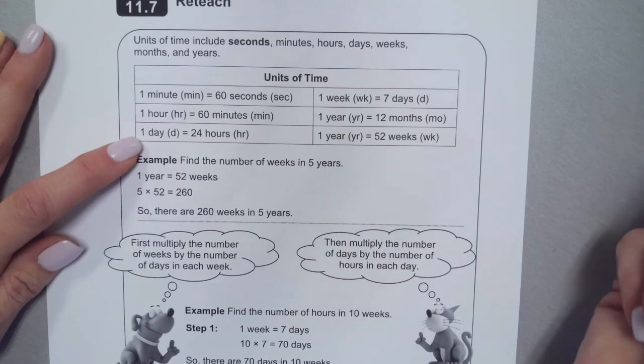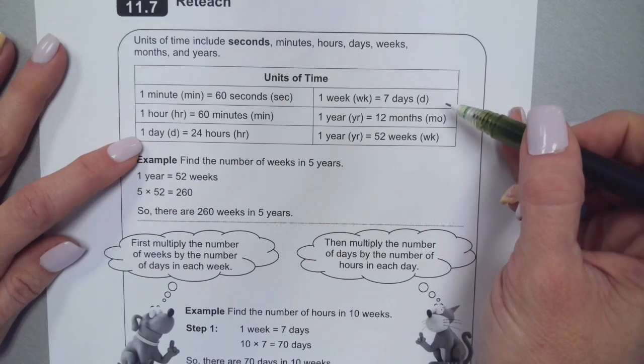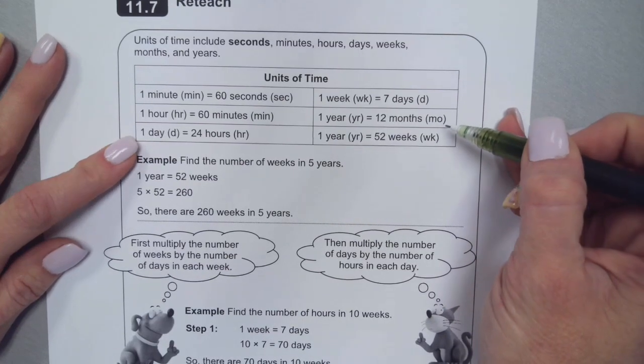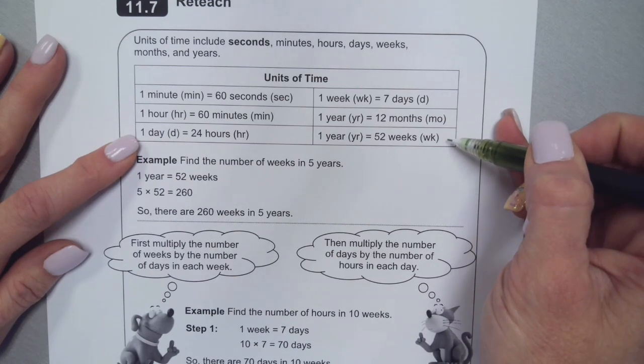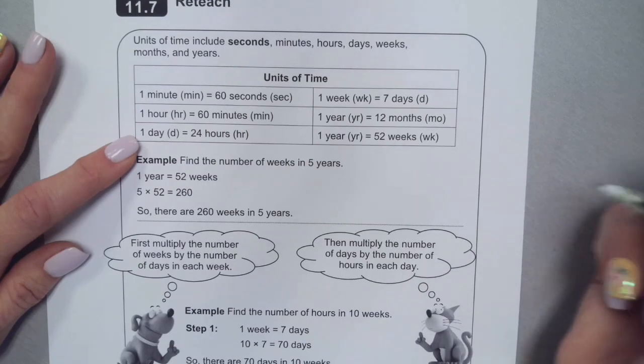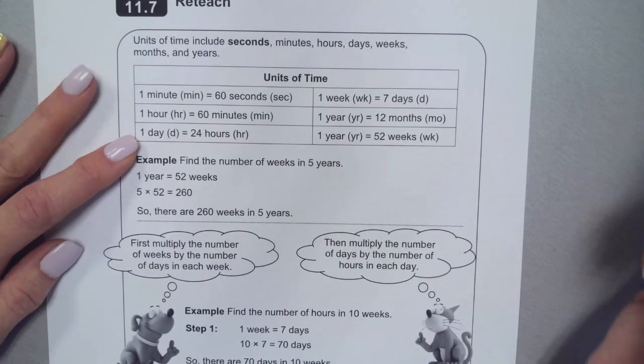One week equals seven days, one year is 12 months, and do you know how many days are in a year? 365, good.